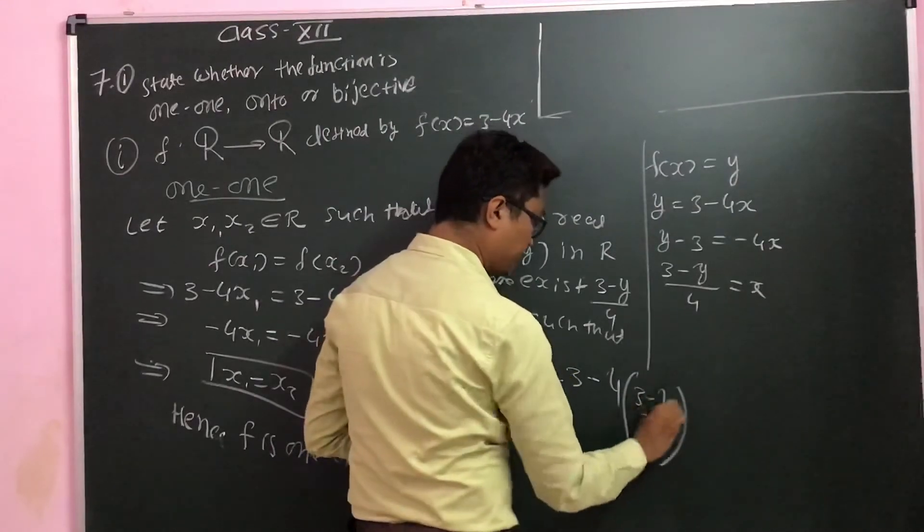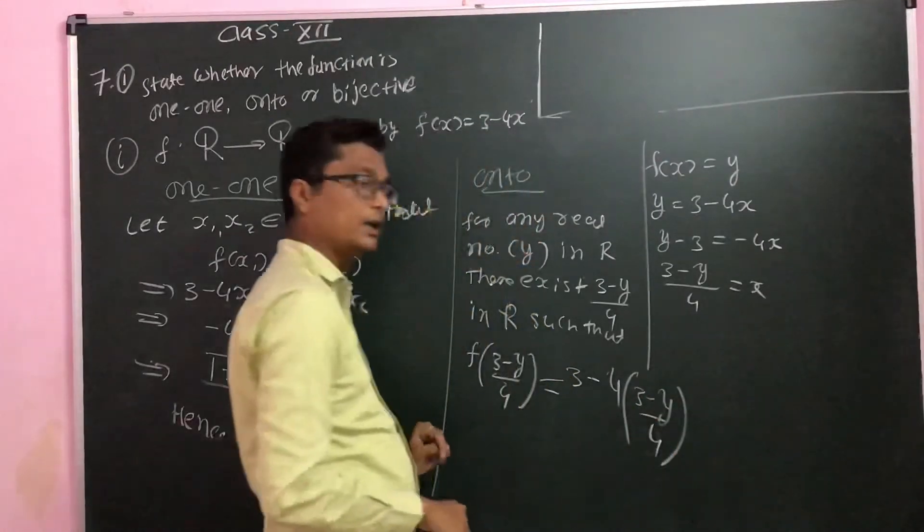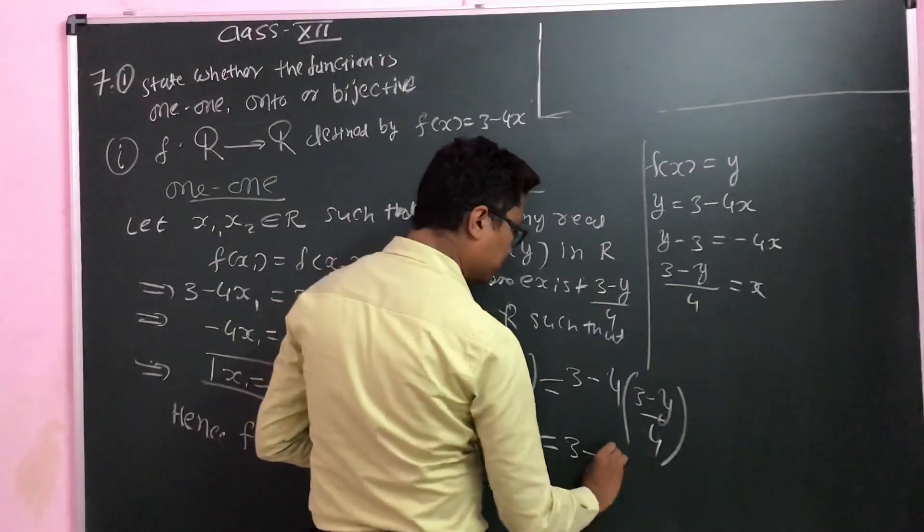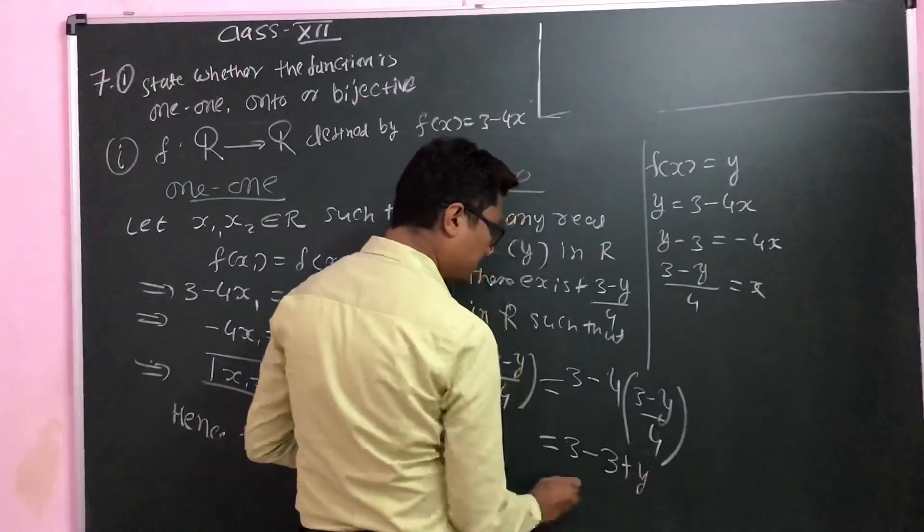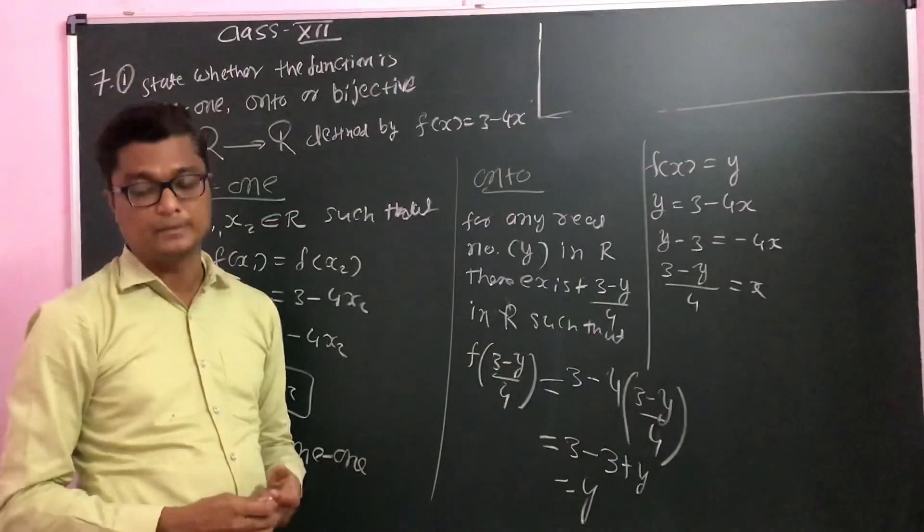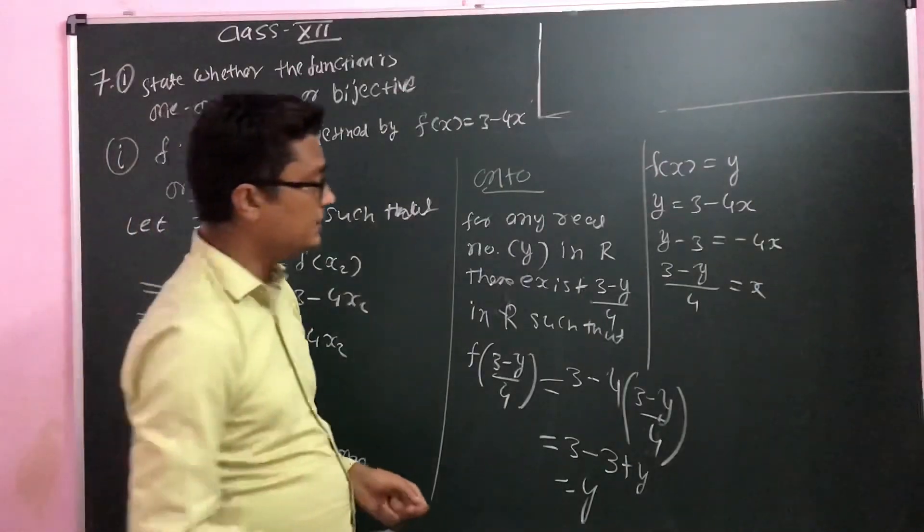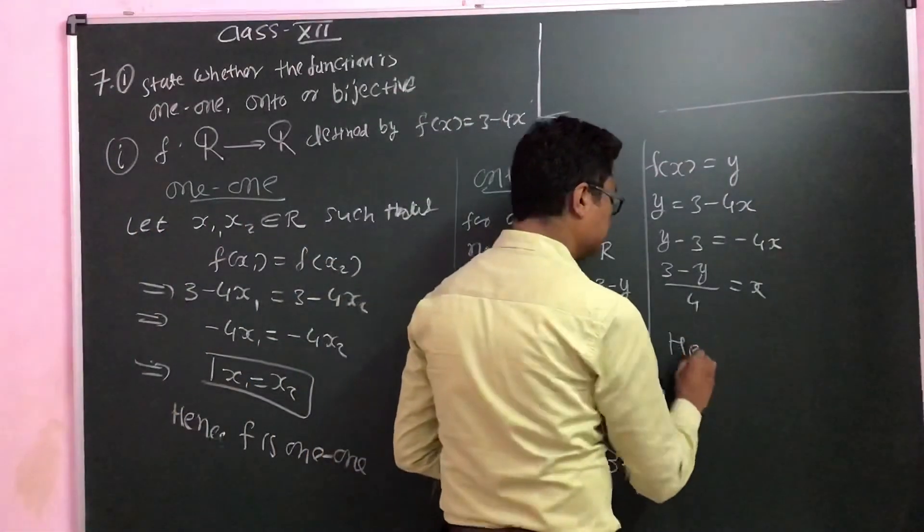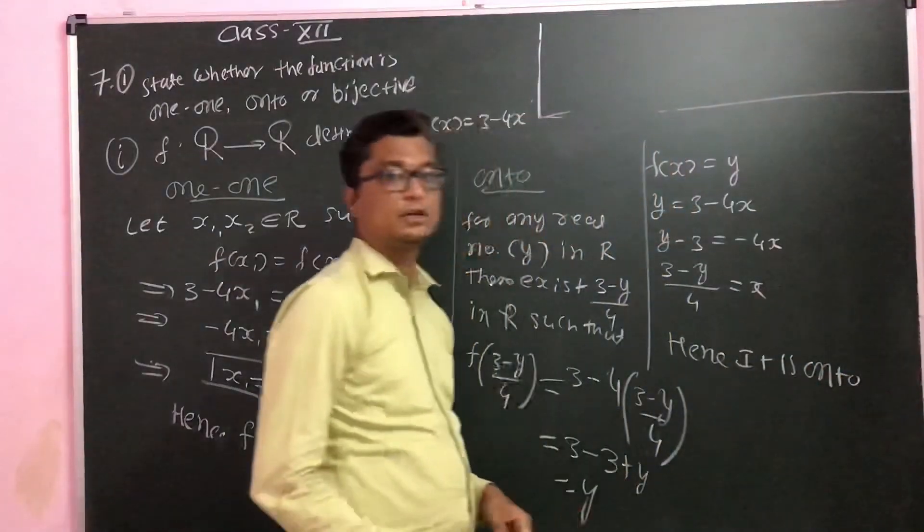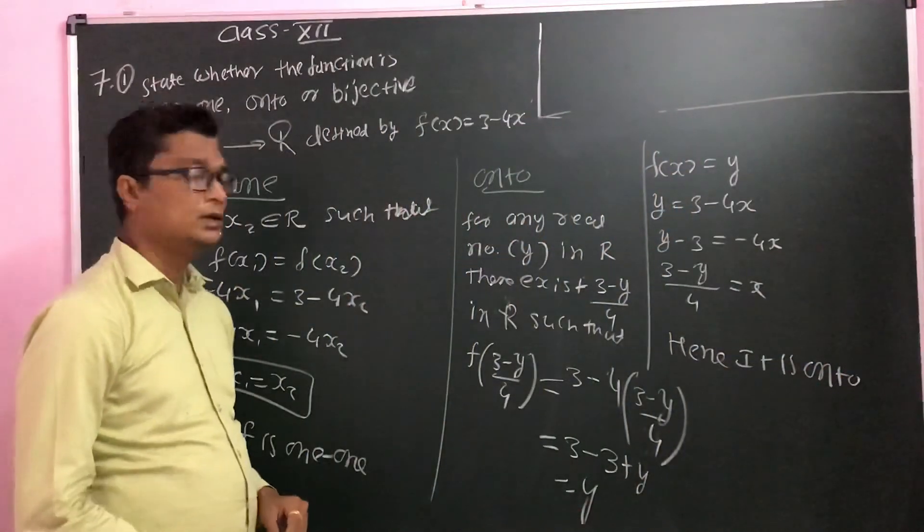The 4s cancel, and now what will be 3 minus 3 plus y, and then we will get y. So I can say that hence it is an onto function.